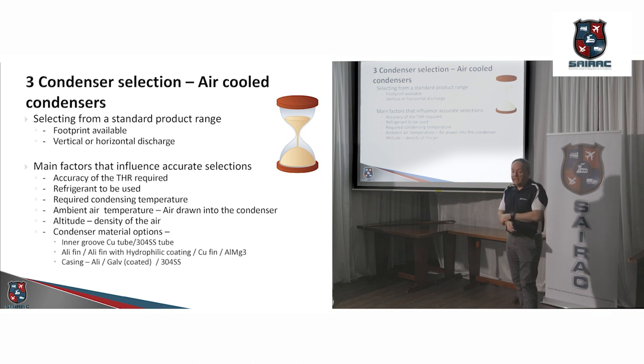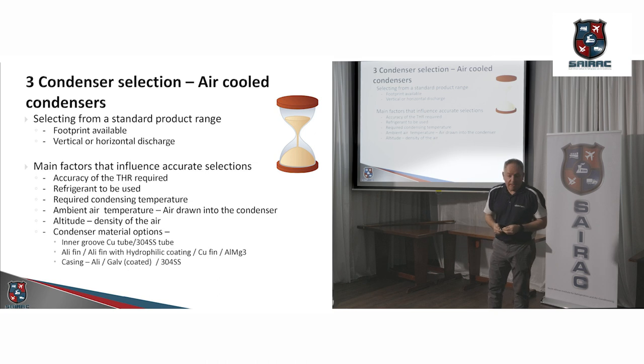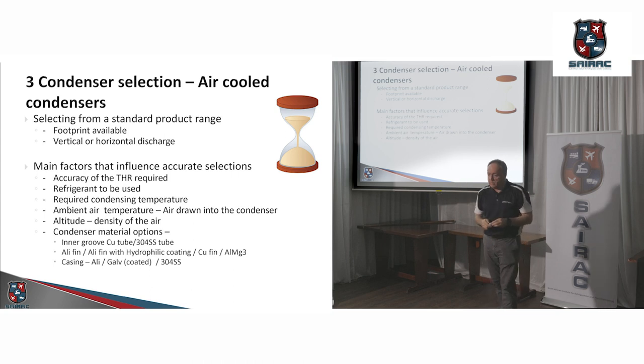The altitude where your condenser is going to operate. The air is thinner in Johannesburg than Cape Town. Air, a cubic meter of air is 1.2 kilograms per cubic meter. I think it's like 0.989 kilograms in Johannesburg. Your fans don't know the density of the air. Your fans draw a specific volume through the coil. So if the air is less dense, the fans work longer to draw the same volume across the coil. So you can understand that a condenser in Johannesburg is less effective because it's about the mass flow of air drawn across the condenser coil.